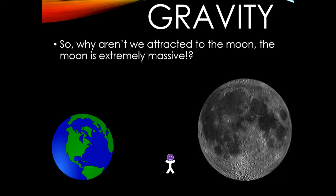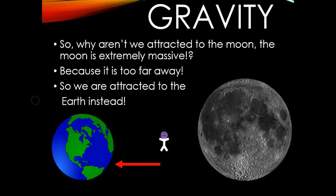The next question is, why aren't we attracted to the Moon? Because it's really massive — it is more massive than the Earth. And that's because it's too far away. So even though the Moon is more massive than the Earth, we're still going to be attracted to the Earth instead because we're closer to it than the Moon.